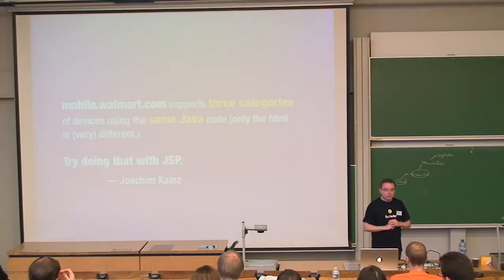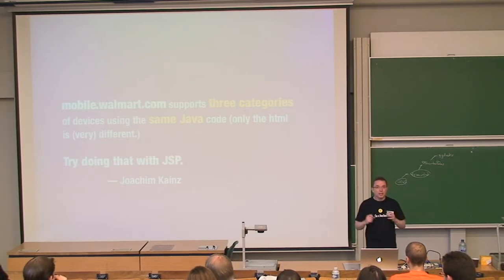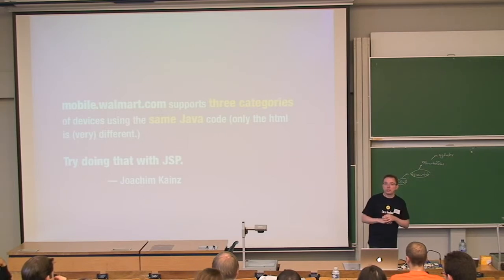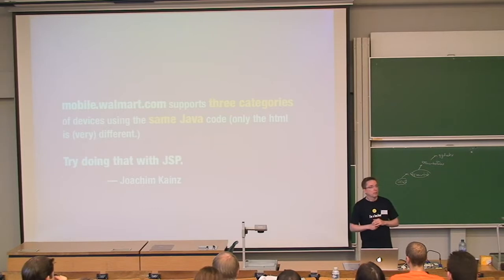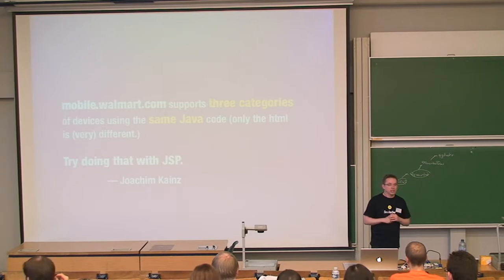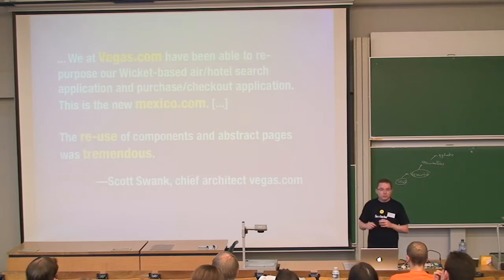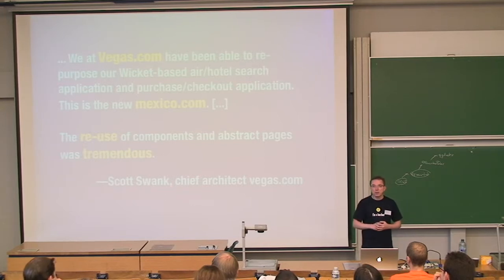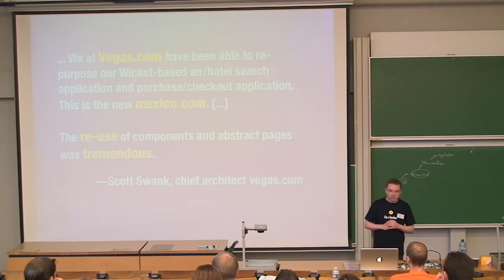A couple of quotes from our users. Mobile.warmel.com supports three categories of mobile devices using the same Java code, with only the HTML being very different. Android and iOS mobile phones are in the same ballpark, but Windows Mobile 6 is really a drag with parsing HTML, so they need to serve different HTML for that. The guys from Vegas.com also launched Mexico.com last year, reusing their existing application to create a whole new website for booking vacations in Mexico. They found that the reuse of their code was tremendous.